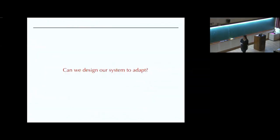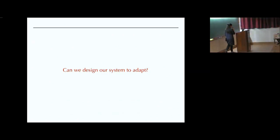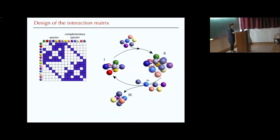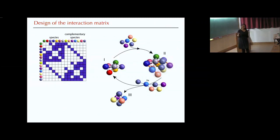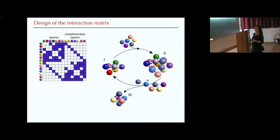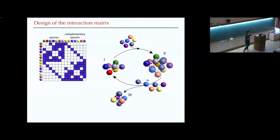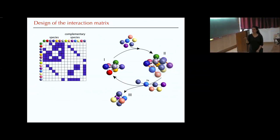This leads me to the last thing I want to mention — the question: can we make a system adapt? This was the design of the interaction we used to create the catalytic system. The original question was how can we catalyze formation of just this octahedron. The first simulation I showed, which was only producing octahedra, had some restrictions applied. We didn't allow some elements in this matrix. If you just take these elements in the matrix and none of the other ones, what you get is always an octahedron and nothing else.